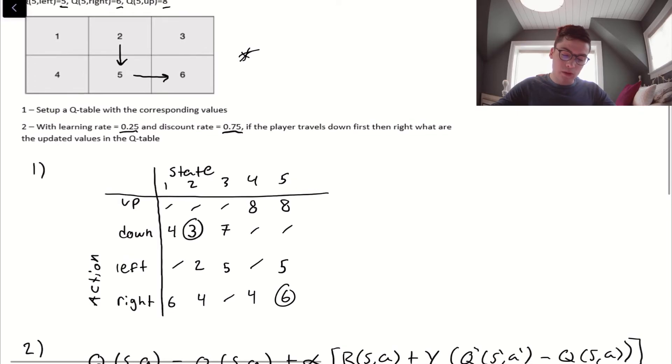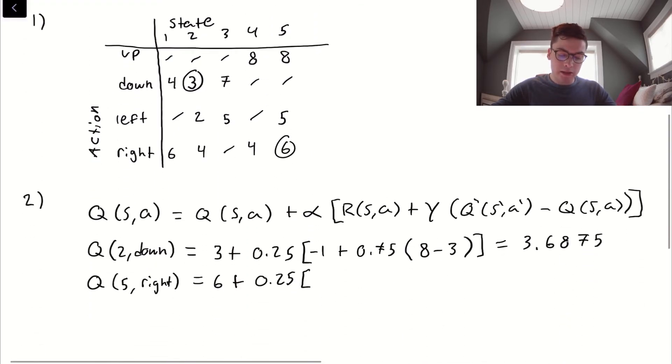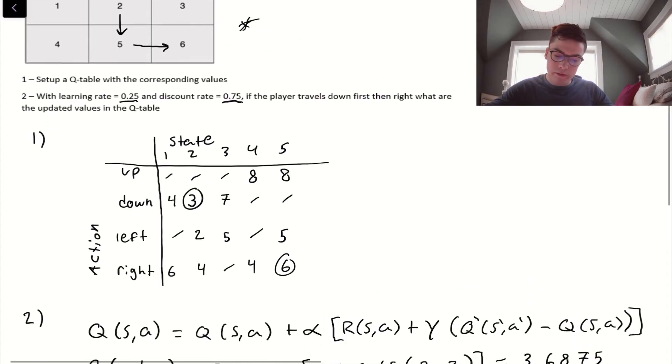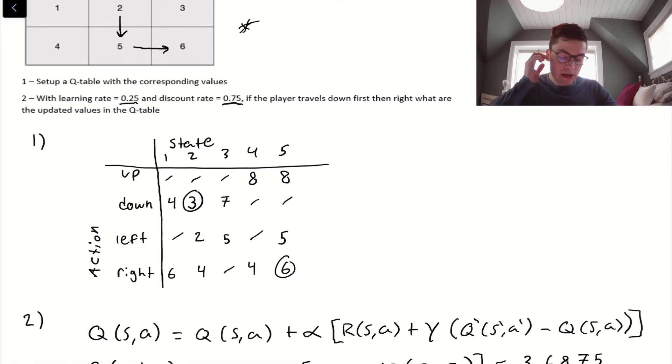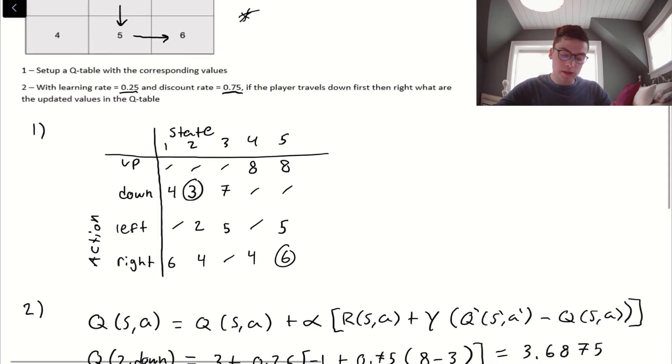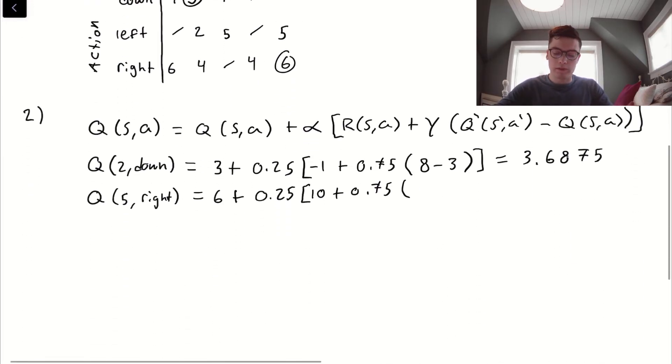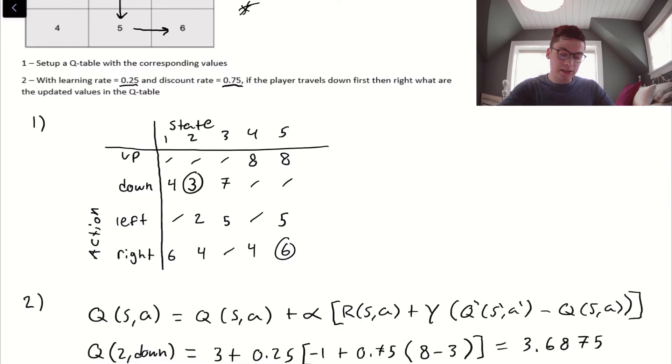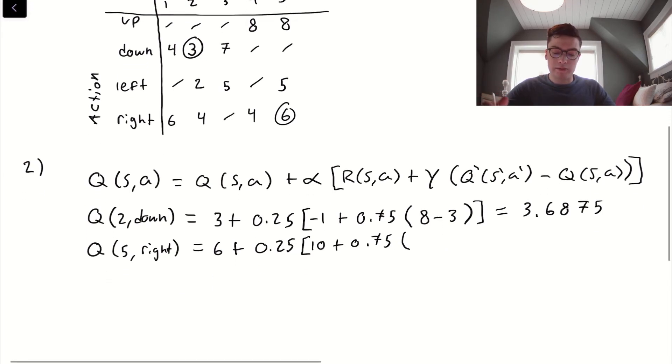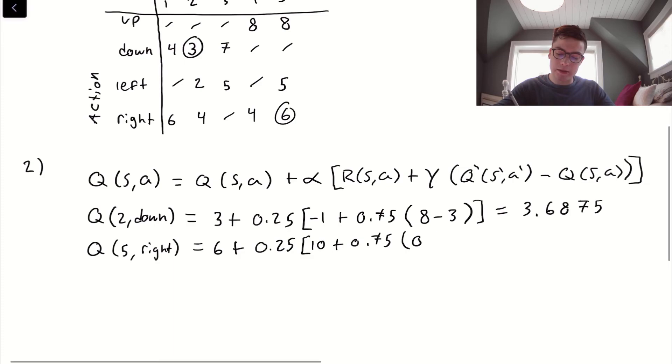10 plus gamma, which is the discount rate, minus maximum future value for the next state. The future value of 6, since 6 isn't in the Q table, there is no state 6 because they didn't give any Q values for 6 in the question. We can't solve for the max value of state 6, so we'll assign it 0. Minus Q of (S,A), which is 6. And if we compute that, that will be 7.5625.